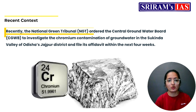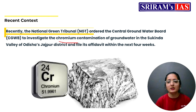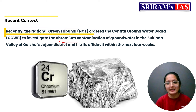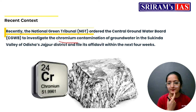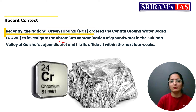Today we also need to read about Chromium, because the National Green Tribunal (NGT) has directed the Central Ground Water Board to look into the issue of chromium contamination in the groundwater of Sukinda Valley in Odisha's Jajpur district. The Board has been instructed to investigate this matter thoroughly and submit a detailed report to the NGT within four weeks, as there are serious environmental and health concerns arising from chromium pollution in that region.